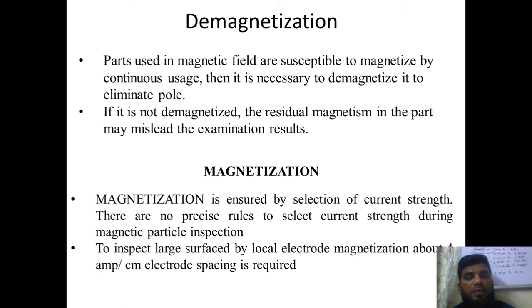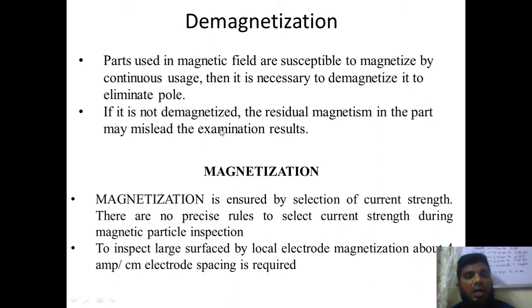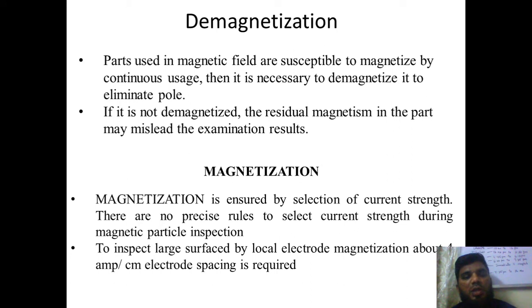Next is demagnetization. If the particle is having some magnetization inside before going for any magnetic inspection technique, it will have some magnetic field around it. The susceptibility of the magnetic particles will not be proper as per the inspection. If not demagnetized, the residual magnetism in the particle may mislead the examination result. If there is already some magnetization present and we are not demagnetizing, because of the previous magnetic field, the north pole and south pole will already be existing.